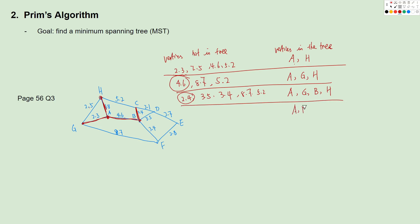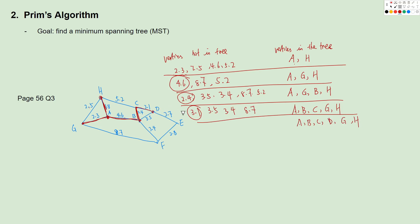Now we have A, B, C, G, H in the tree. We look at edges: C to D is 3.1, B to D is 3.5, B to F is 3.4, G to F is 8.7. We choose the least value, which is 3.1, so we connect C and D. Now with A, B, C, D, G, H in the tree, we look at edges again: B to F is 3.4, D to E is 3.7, G to F is 8.7. We choose the smallest, which is 3.4.